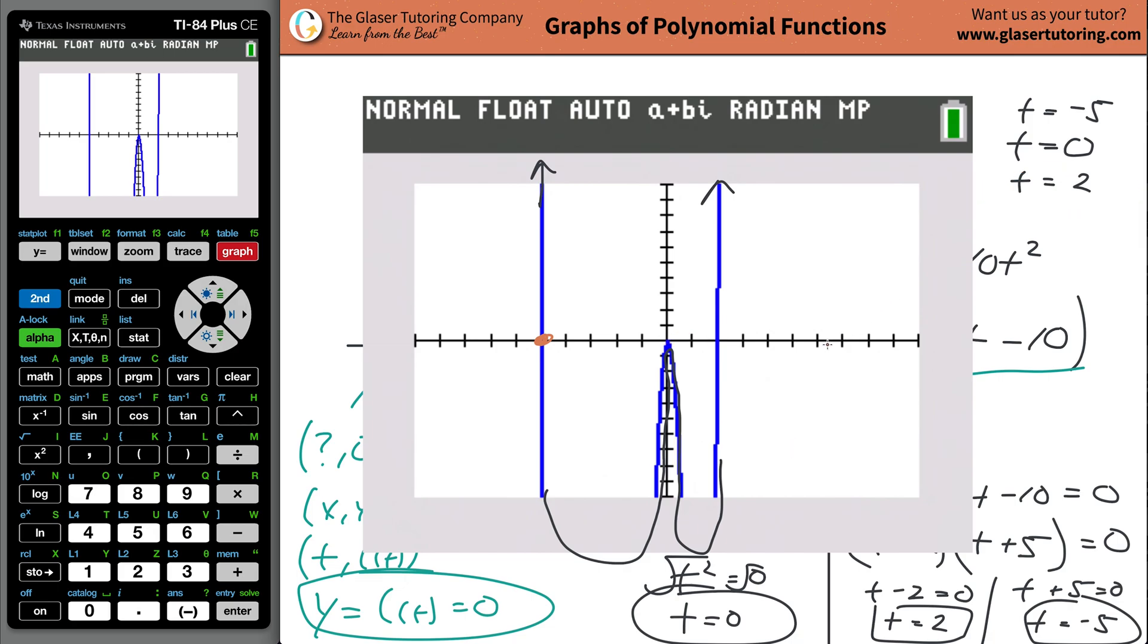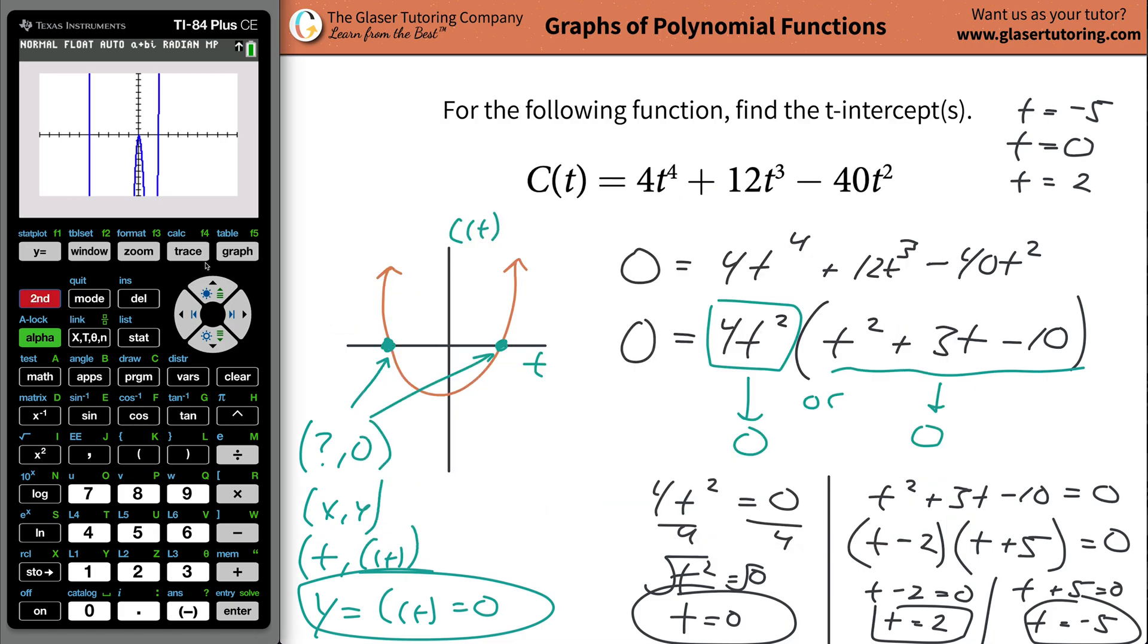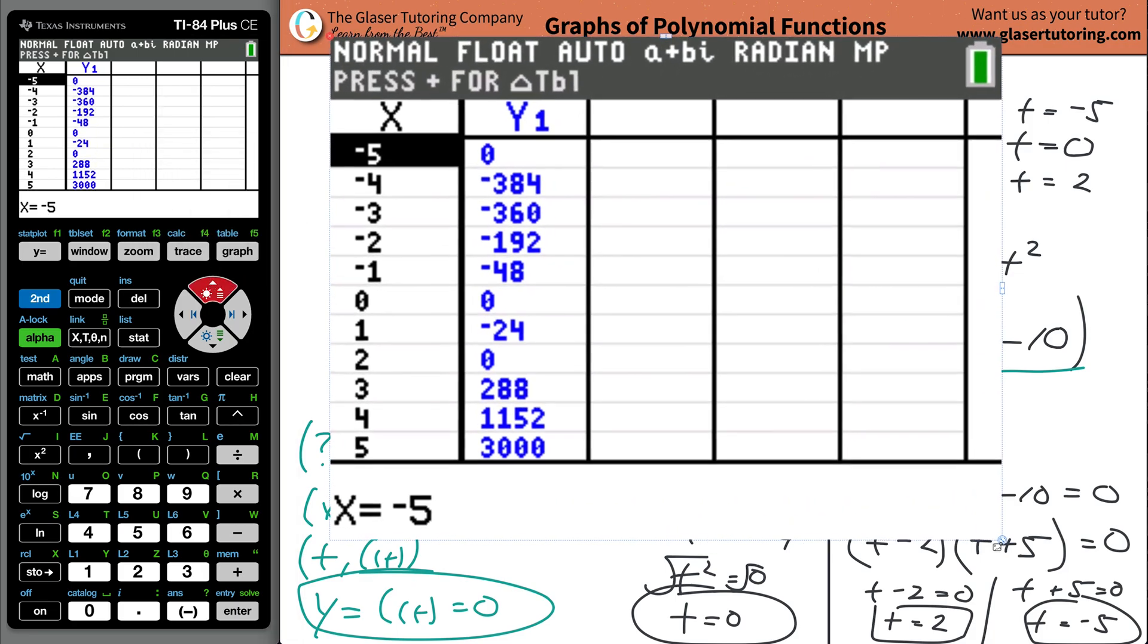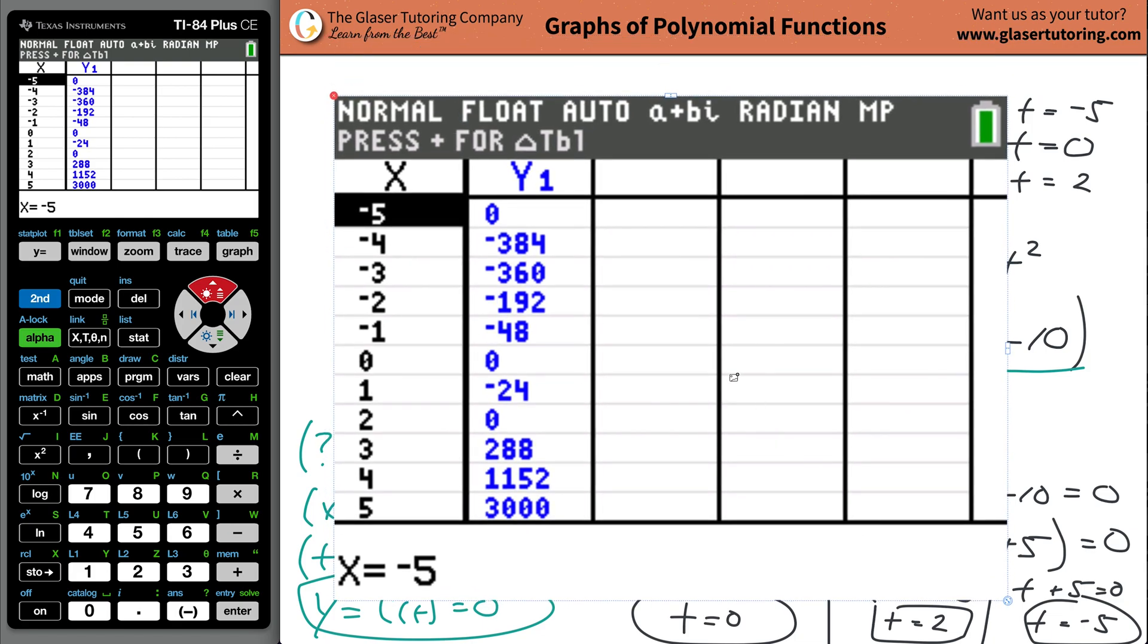And if you're still not convinced, you can go to your table. So go now, hit second table. And I'm going to scroll up a little bit to try to get all the values on the table. Now, remember, we defined the t intercepts, by using the calculator I have to call it X intercepts, but we define them to be the values of X when the Y value is equal to zero. So if these are the locations on your table where the Y value is equal to zero, then the corresponding X values will be your X intercepts. Negative five, zero, and two.